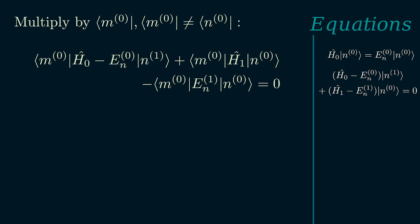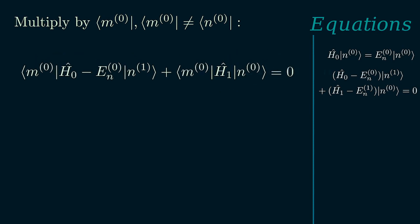In order to do that, we'll use the linearity property to split this term like so. Since En1 is just a constant, we have pulled it out. And due to the fact that energy eigenstates are orthogonal and because we have assumed m0 to be different from n0, the inner product of m0 and n0 will just be zero. So this last term will just vanish.